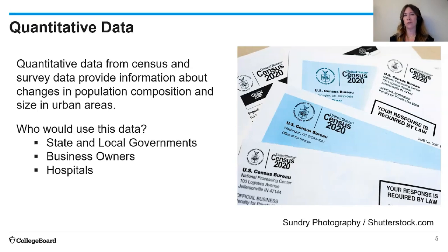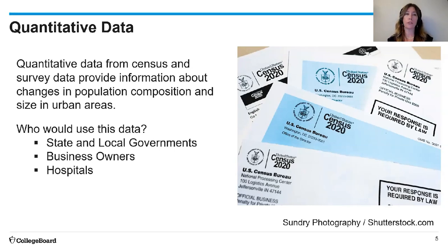How could a state or local government use census data? They need an accurate count of the population because we determine our representation in government based on census data. If a state increases in population, they might get another representative in Congress. If they lose population, they could lose representation. So every 10 years we look at the numbers and might redistrict depending on where population has changed.